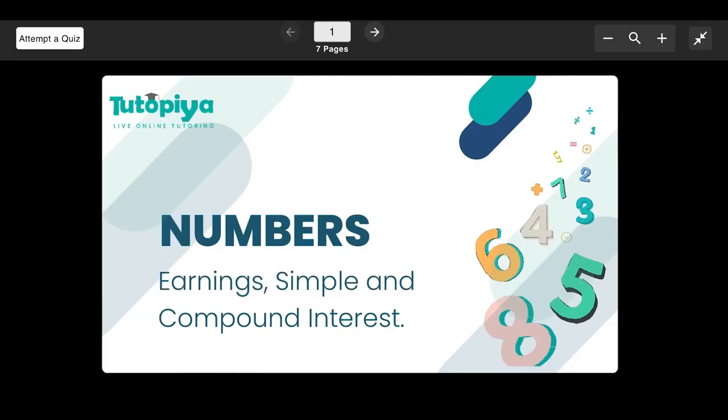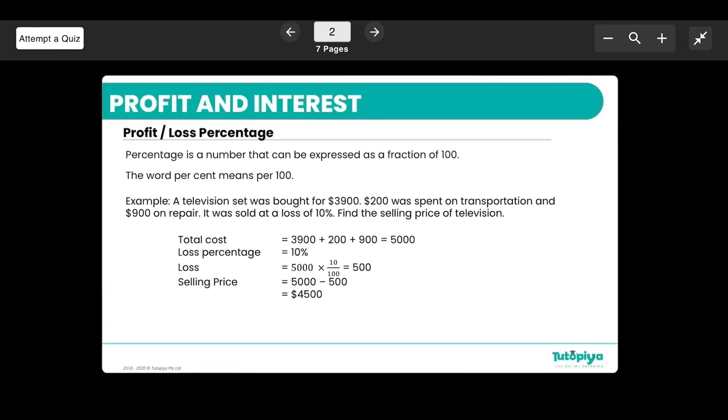Hello everyone, today we're focusing on Cambridge IGCSE mathematics, topic of number, subtopic earnings, simple and compound interest. To begin with, we are going to look at profit and interest, basically profit and loss percentages. We are aware that percentages is basically a number that can be expressed as a fraction of 100, percent meaning per hundred.